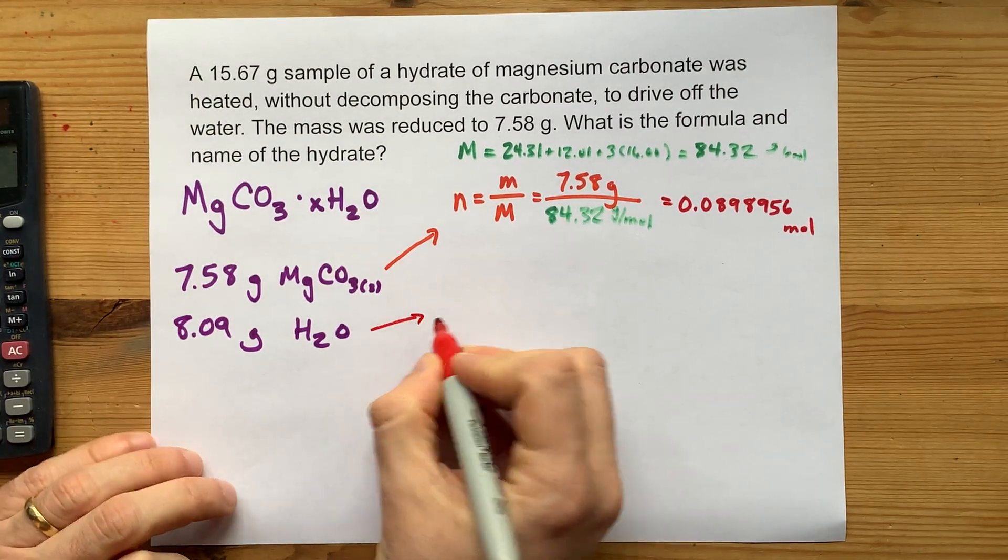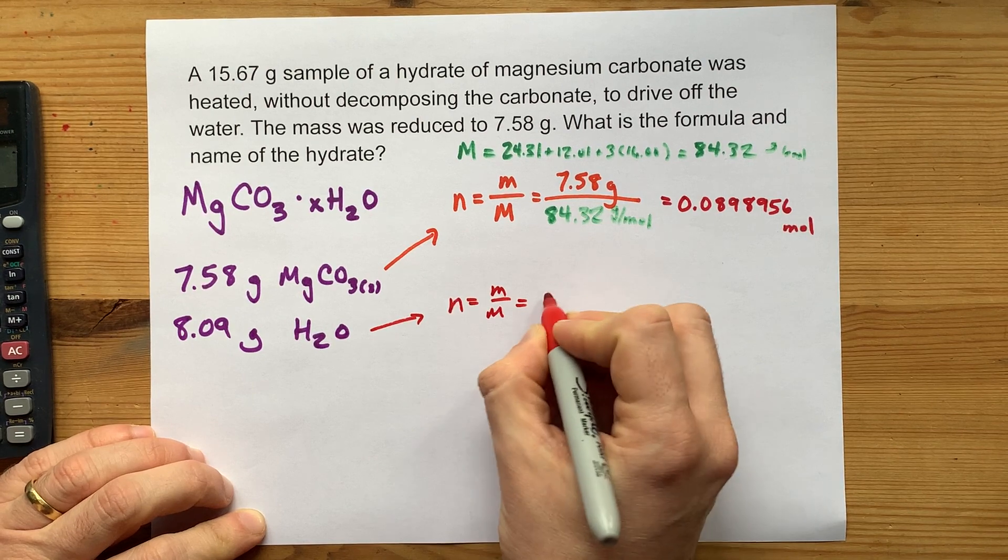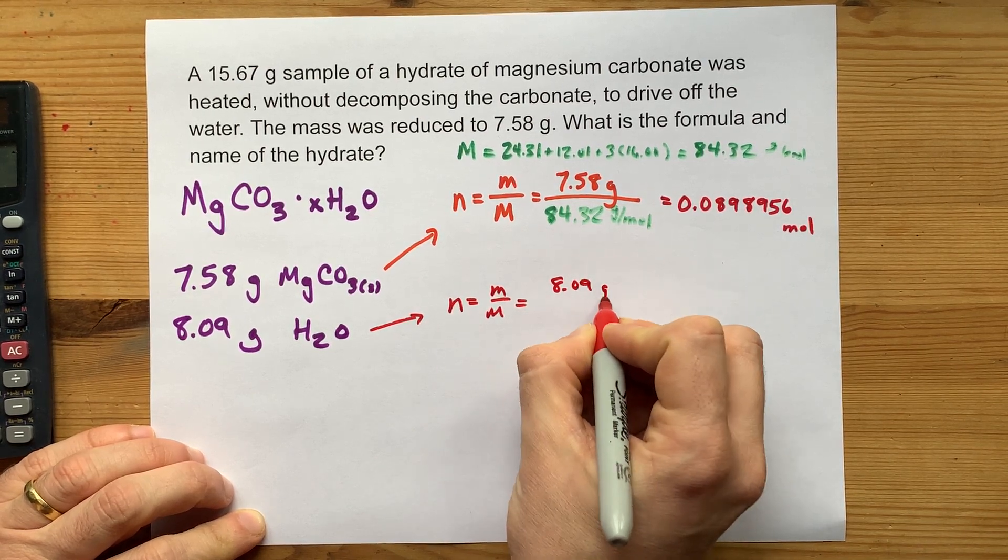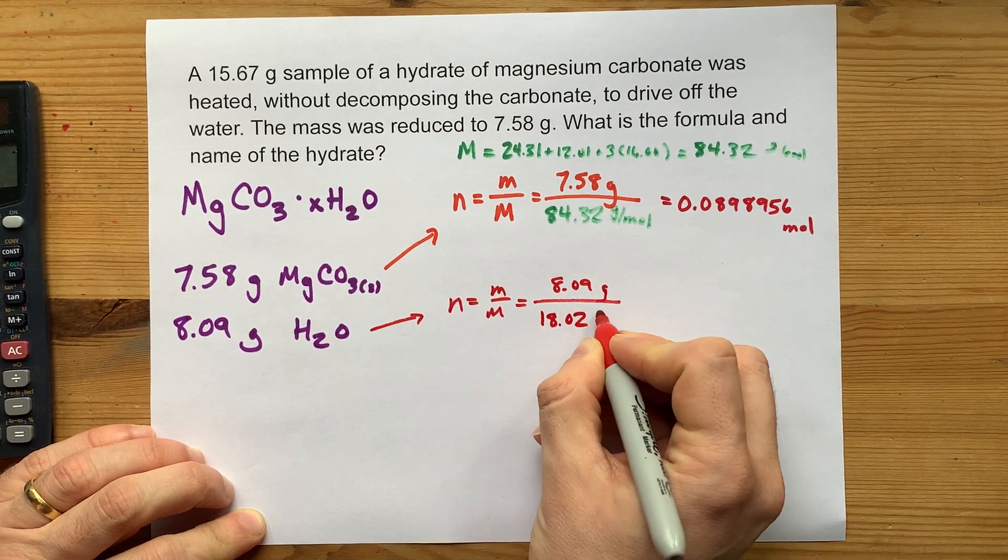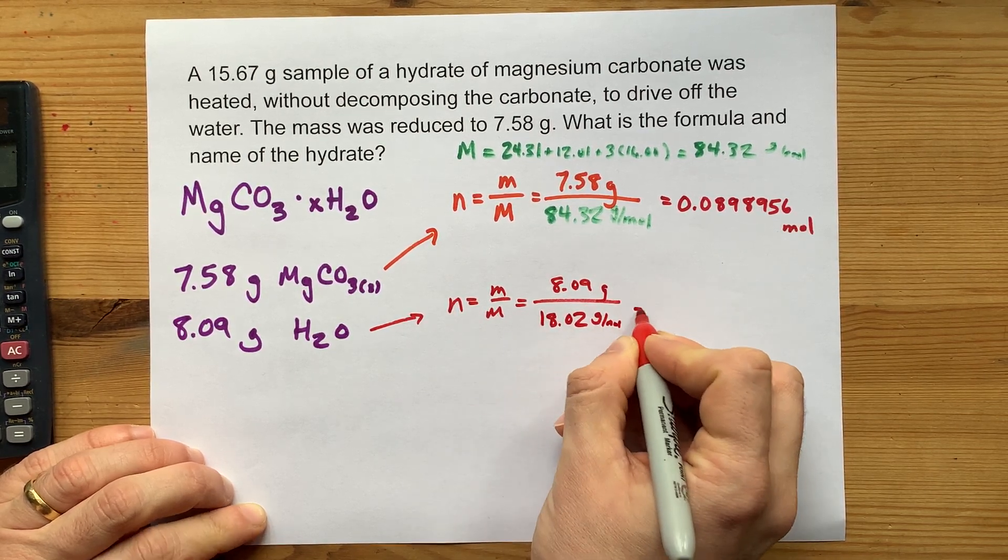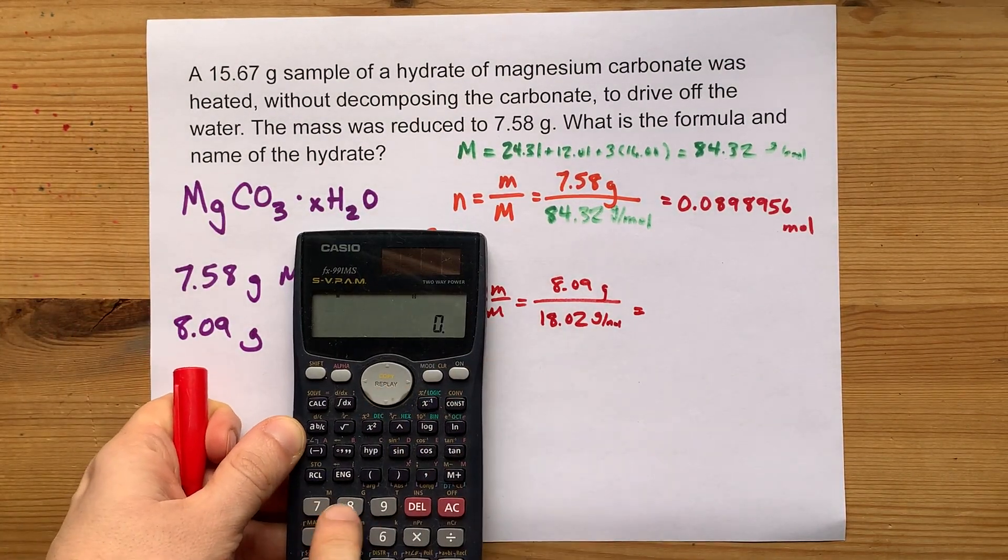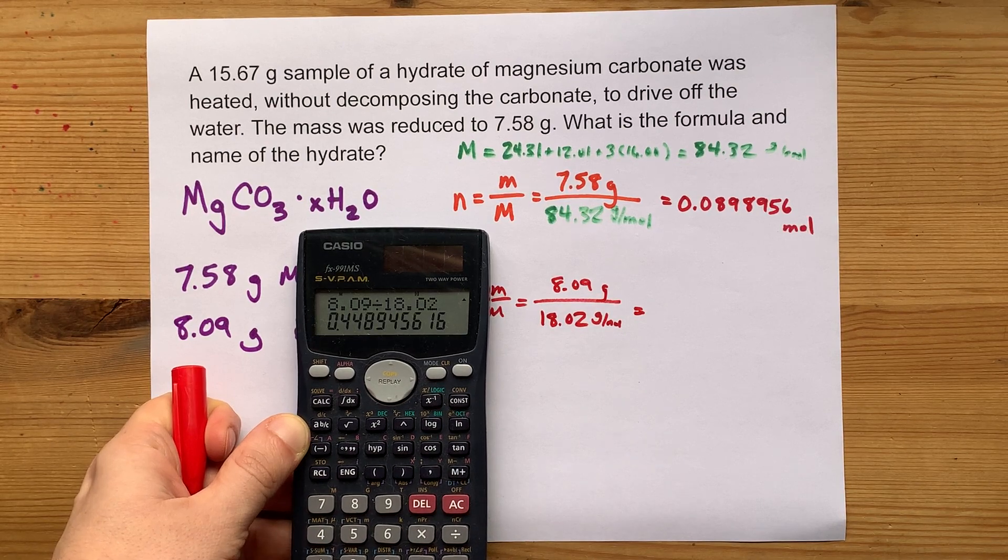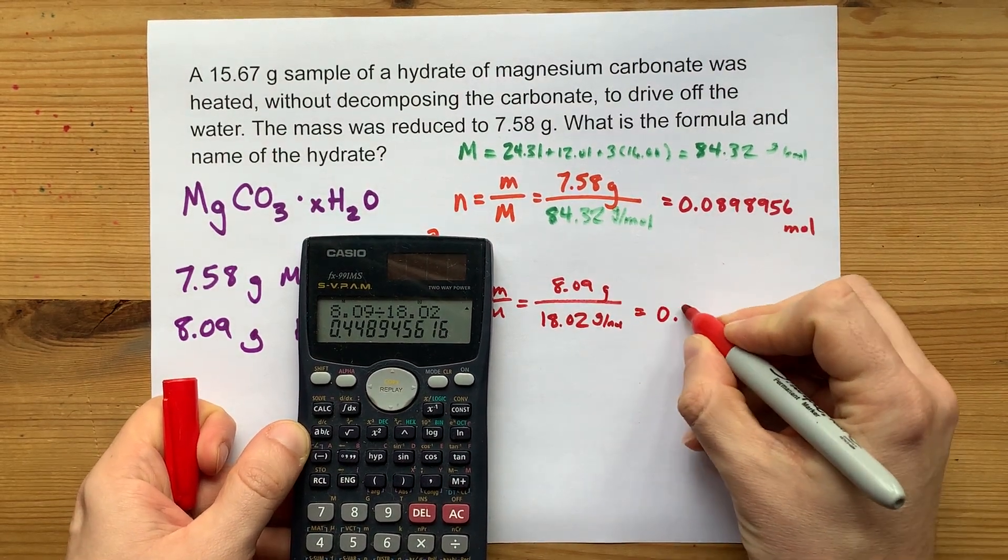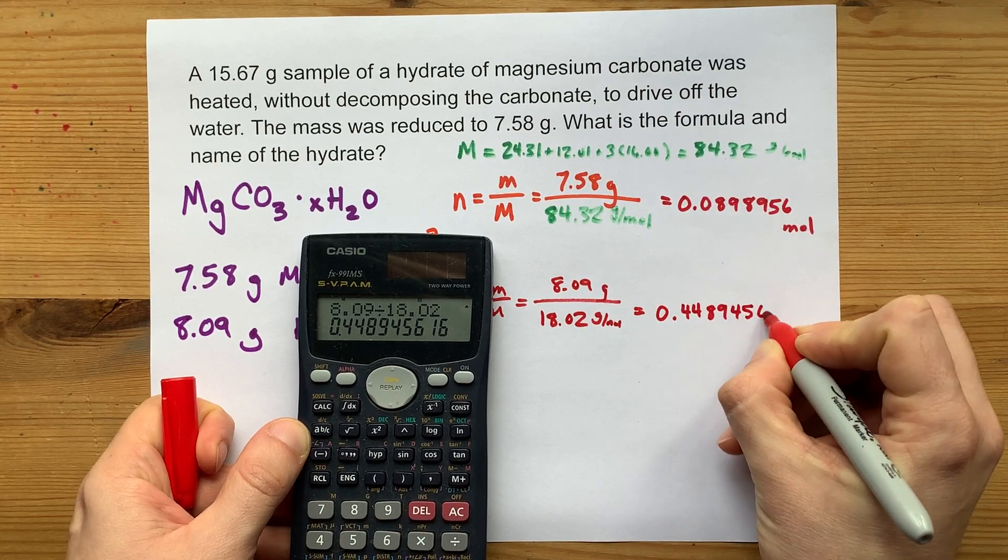Now we've got to do the same thing for water. The number of moles is mass over molar mass. That's 8.09 grams divided by, if you do the molar mass of water, it's always 18.02. You can just take my word on that. By grade whatever, you'll have eventually memorized that. Divided by 18.02 gives me 0.4489456 moles.